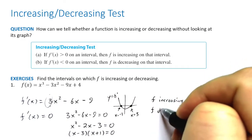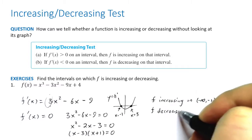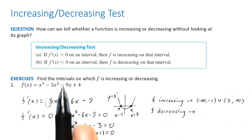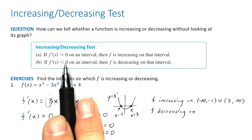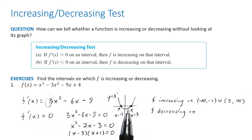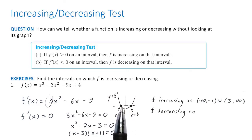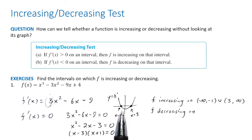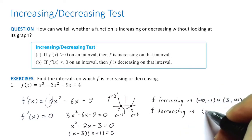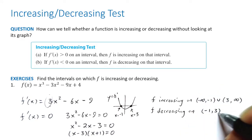What about decreasing? F is decreasing when the derivative is negative. Looking at the graph of the derivative, it's negative between negative 1 and 3. So f is decreasing on the interval negative 1 to 3.